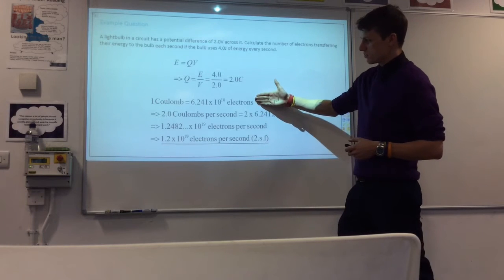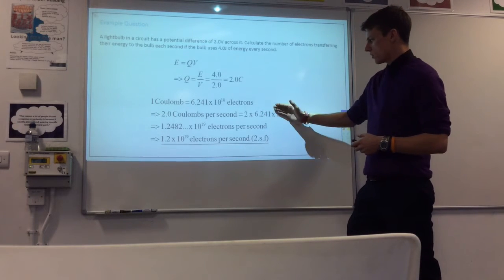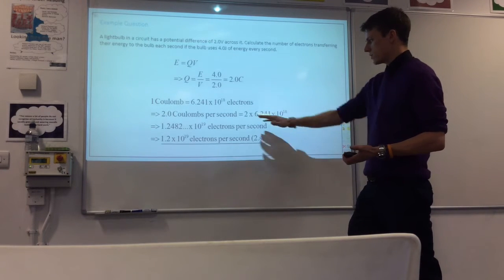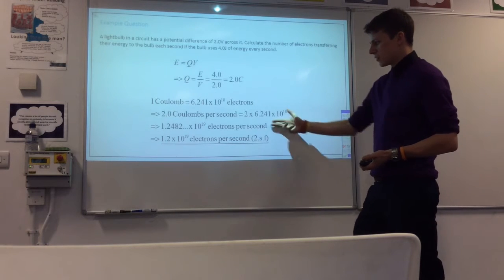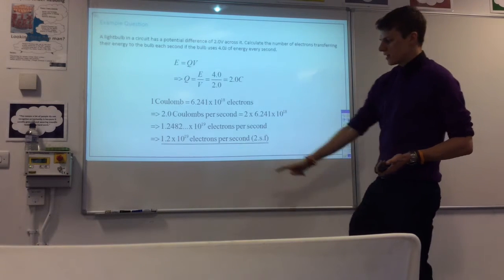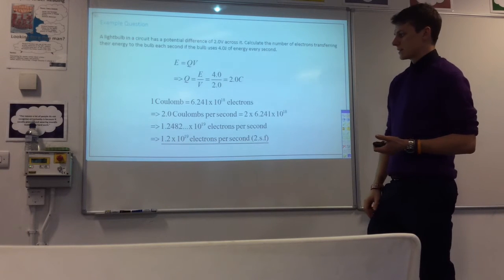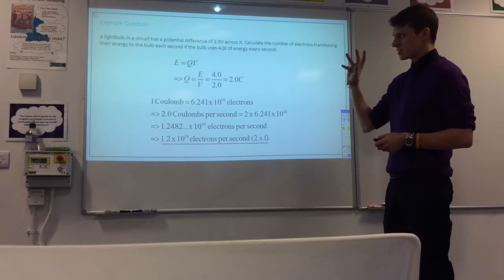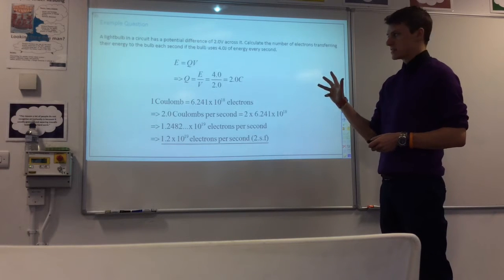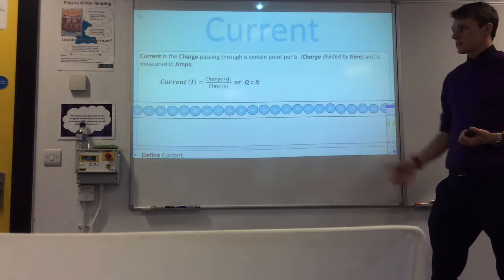So we know one coulomb is this many electrons so two coulombs will be twice as many and we can calculate that and give it to the right number of significant figures and get 1.2 times 10 to the 19 electrons per second there. Okay, so that's how we might use that information. Let's now move on to look at current.